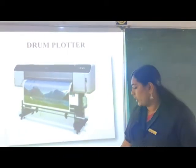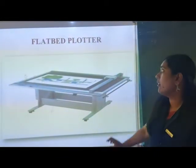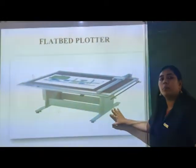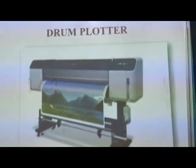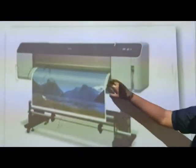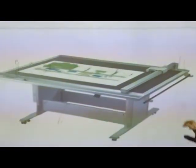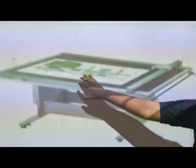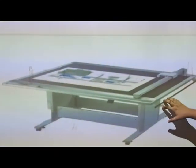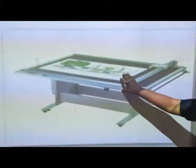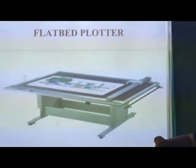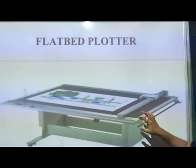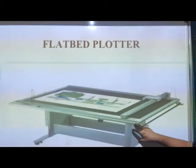In a plotter, we have another type called a flat bed plotter. Can you see the difference between these two? In the drum plotter we have a drum inside, whereas in a flat bed plotter we can see a flat surface where we keep our papers. Flat bed plotters are used for printing designs of cars, spacecraft, etc.